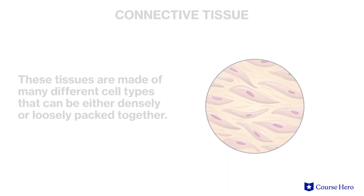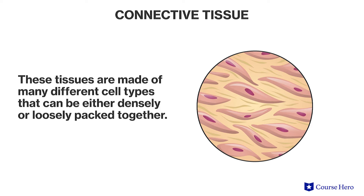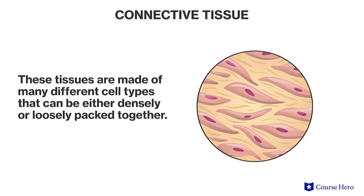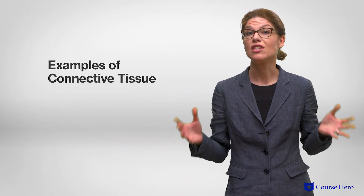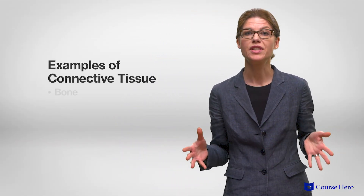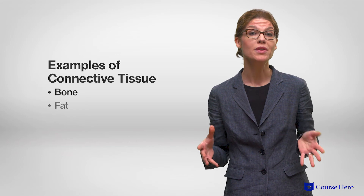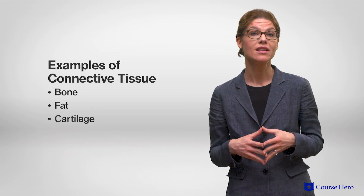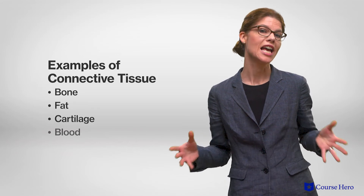Finally, connective tissue is made of many different cell types that can be either densely or loosely packed together. But collectively, they provide structure and support for the body. Examples of connective tissues are bone, fat, cartilage, and blood.